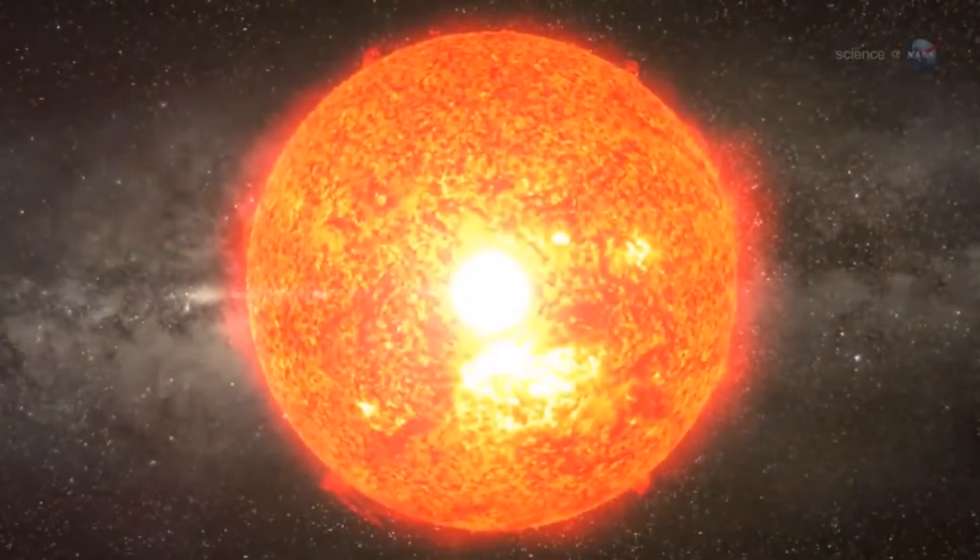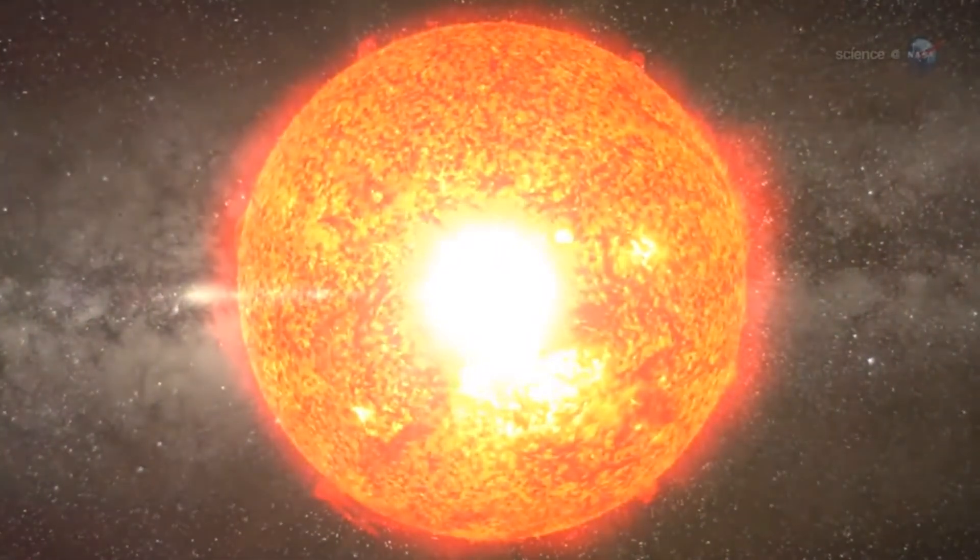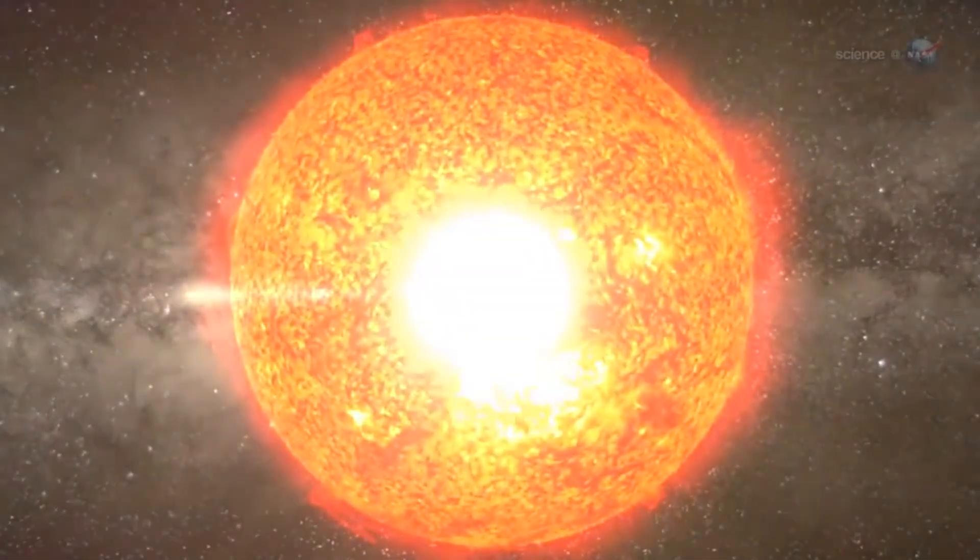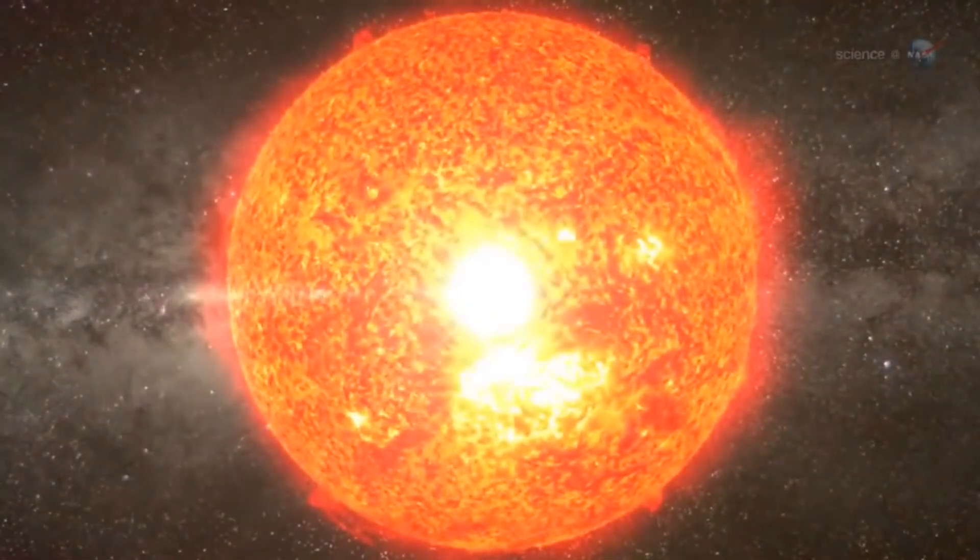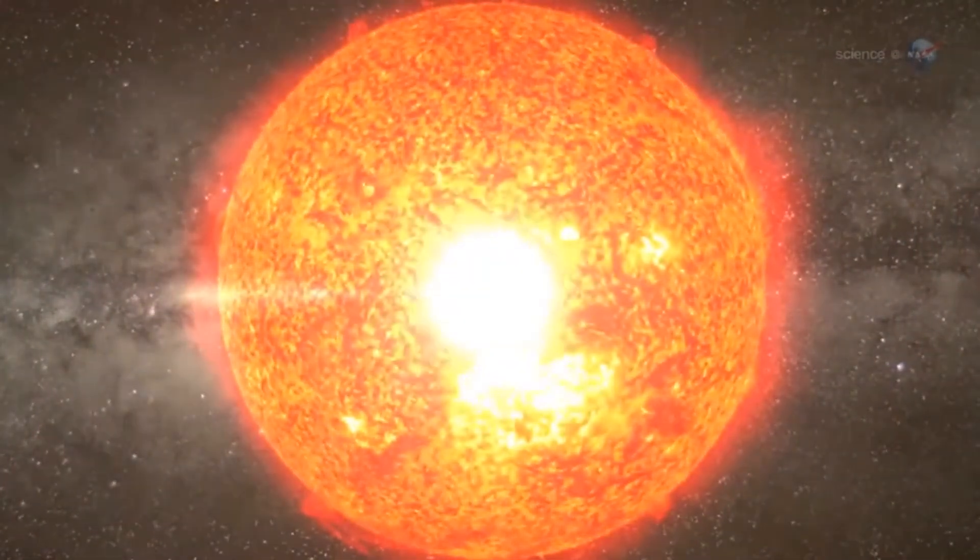After this phase the outer layers of the Sun will continue to expand. As this happens the core will contract. The helium atoms in the core will fuse together forming carbon atoms and releasing energy.